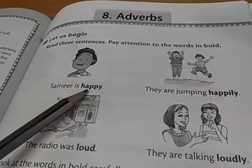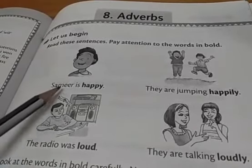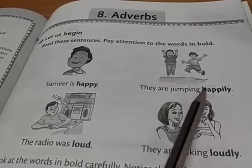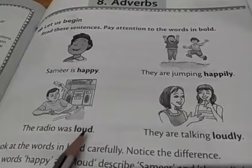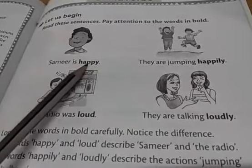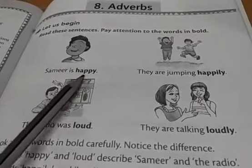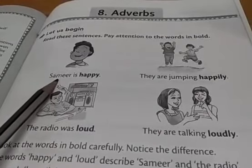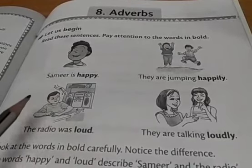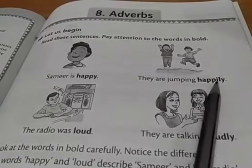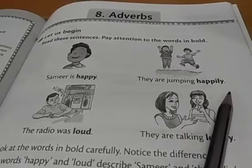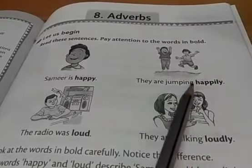Samir is happy. This boy's name is Samir. He is happy. Just look at the words in bold here. Notice the difference. Here we have said 'happy' — it describes that Samir is happy. And here we have said 'the radio was loud', which describes that the radio was very loud. But in this sentence we are using 'happily' and 'loudly', which describe some actions — actions of jumping and talking. So these are adverbs.